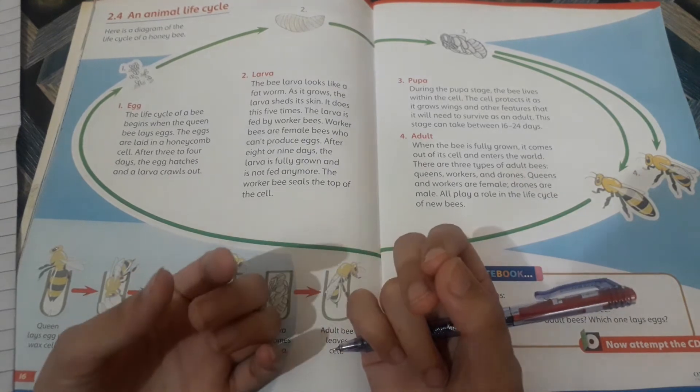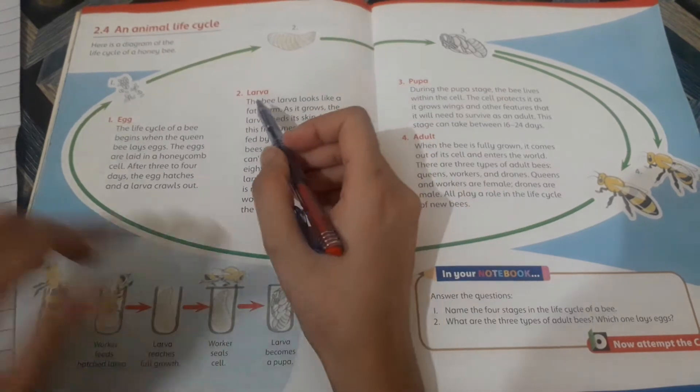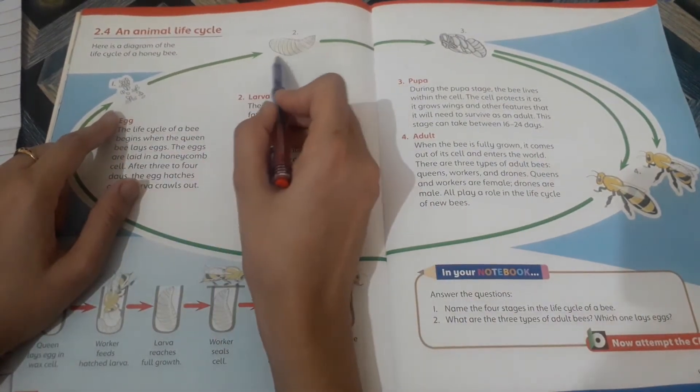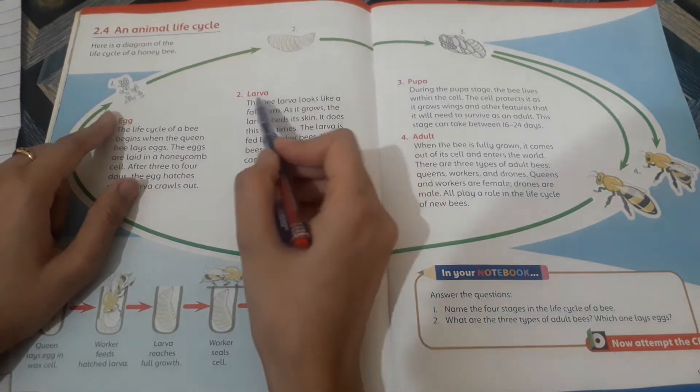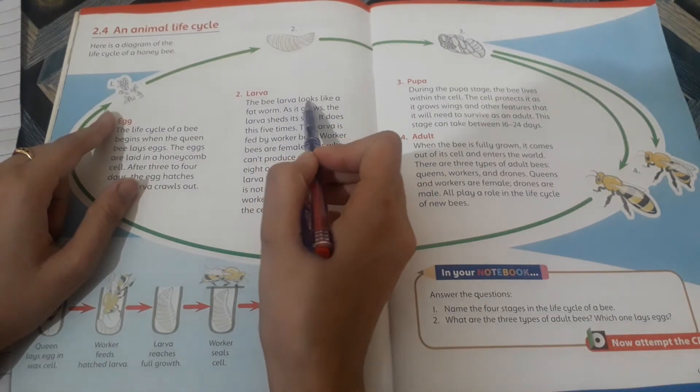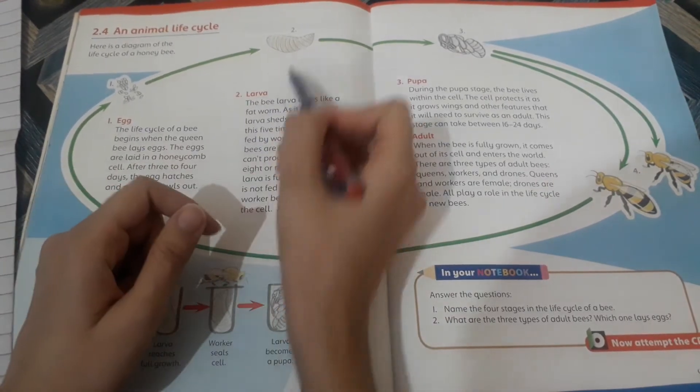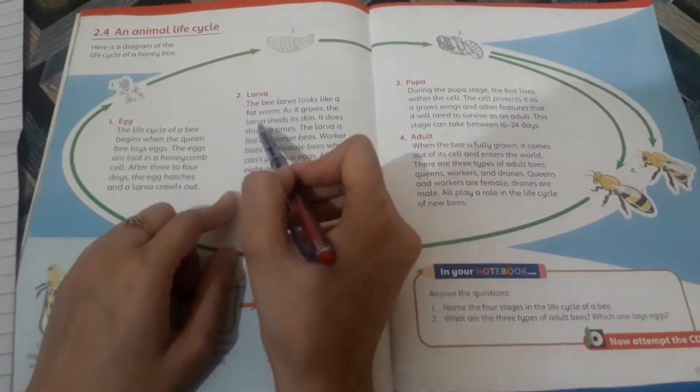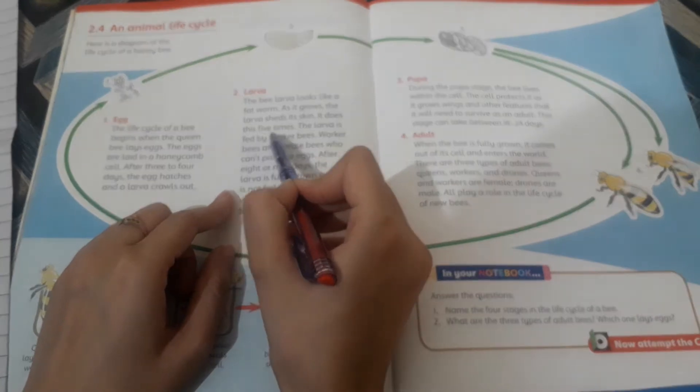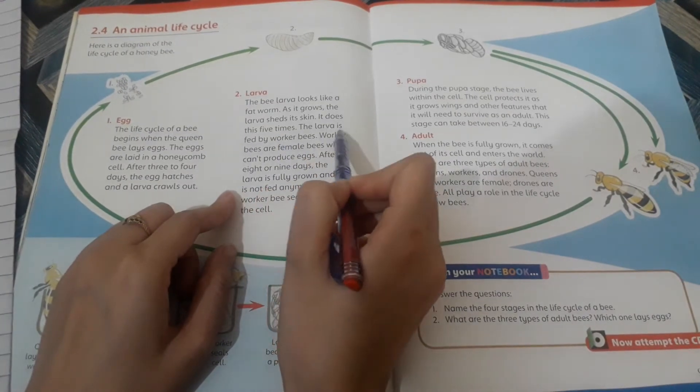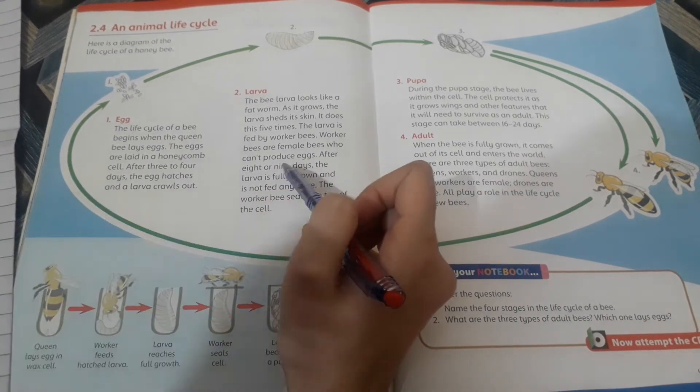The larva is like a caterpillar. The bee larva looks like a fat worm. You can see here. As it grows, the larva sheds its skin. It does this five times. The larva is fed by worker bees. Worker bees are female bees who can't produce eggs.